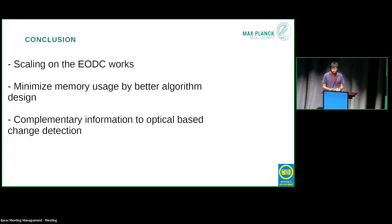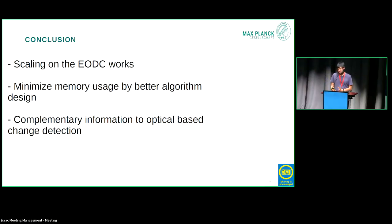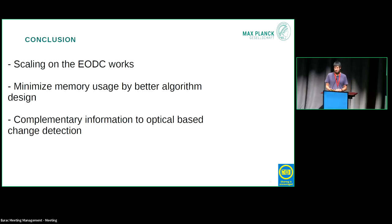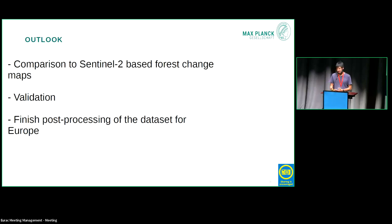In conclusion, the scaling of the workflow works — this computation could actually be done all over the globe, so it's essentially tile-agnostic and we could just run it anywhere. We had to minimize memory usage through better algorithm design to actually achieve this. I think that Sentinel-1 based forest change maps give good complementary information to optical-based change detection algorithms. In the outlook, I want to compare this to optical-based forest change maps, do a proper validation, and finish the post-processing of the dataset for all of Europe.